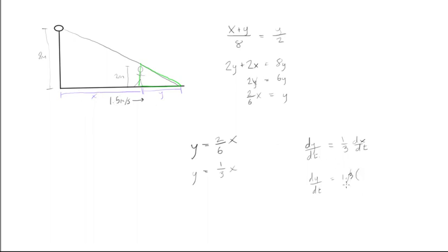This is (1/3) times 1.5. We find that dy/dt, the rate of change in the length of the shadow, equals 0.5 meters per second.